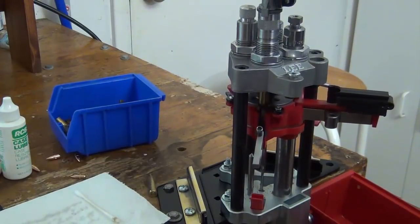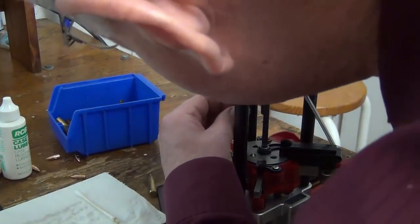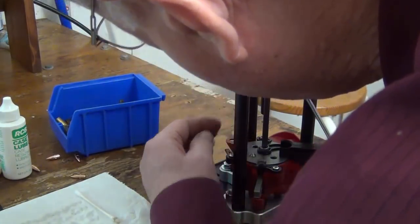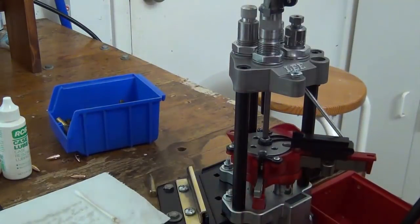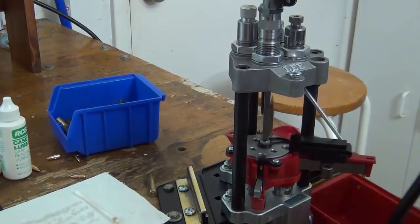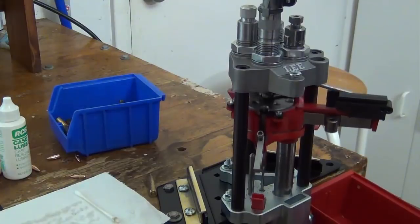Now go ahead and charge it and then it'll rotate to the next position where you'll put a bullet in place and seat the bullet and then rotate to the crimping and crimp it.